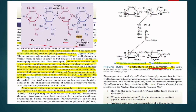Peptidoglycan is made up of NAG (N-acetyl glucosamine) and NAM (N-acetyl muramic acid). But in the archaeal cell wall, pseudomurein is made up of N-acetyl glucosamine — which is also present in peptidoglycan — but N-acetyl muramic acid is missing. In its place, they have N-acetyl talosamurinic acid.